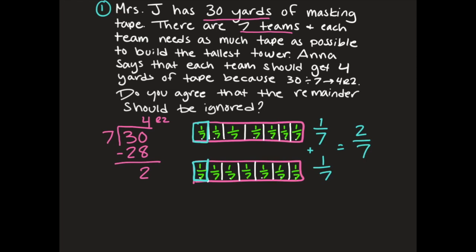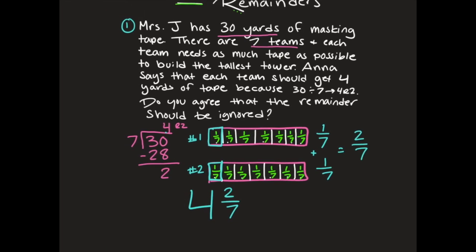When I add those together, they are going to get an extra two sevenths of a yard of tape. Now when I look at my final answer, I'm going to say that each team can get four yards, and a little bit extra because we split up that remainder two sevenths. So four and two sevenths. I split those two yards up into sevenths, so now I have four and two sevenths of a yard.